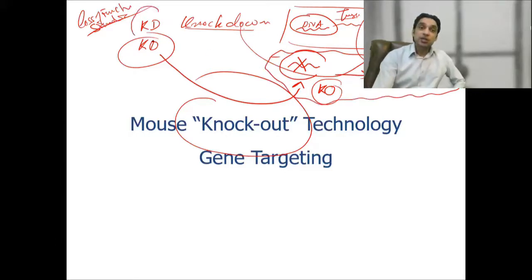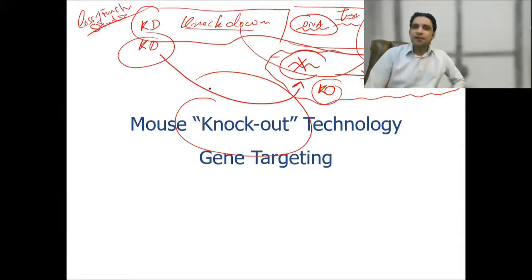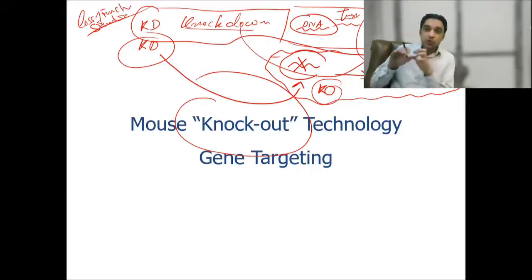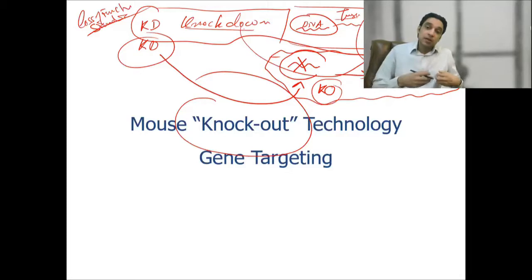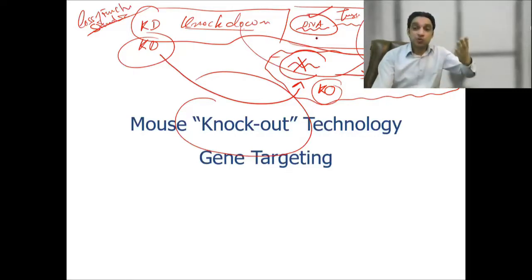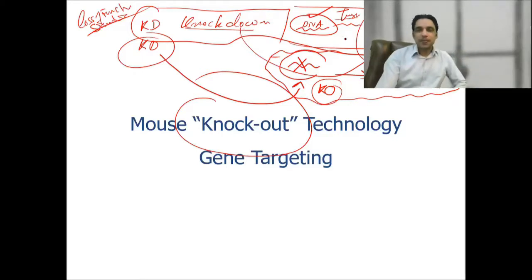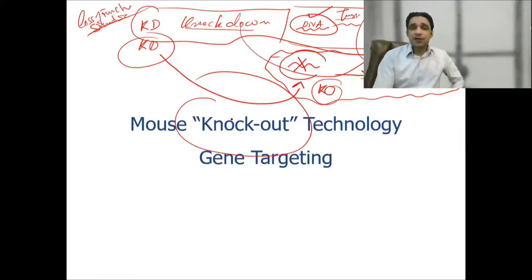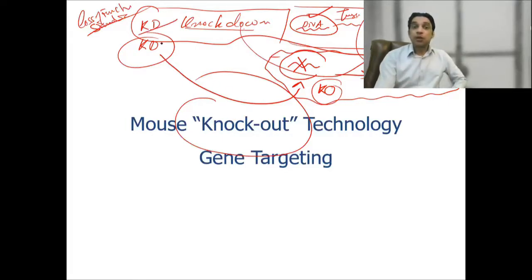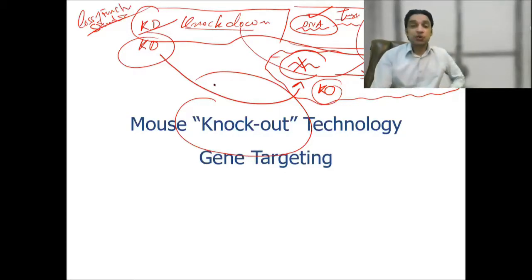Gene knockdown is a kinder way of studying loss of function. We can destroy the messenger RNA, study the effects, and after the job is done new messenger RNA will be created because the DNA is intact — new rounds of mRNA will restore the function. In the knockout case, the function is lost completely and permanently. Knockdown proved to be a better version; we use small interfering RNA, which helps us understand the function of many genes.